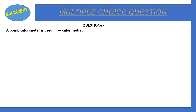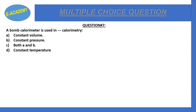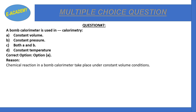Question number seven: A bomb calorimeter is used in which type of calorimetry — constant volume, constant pressure, both A and B, or constant temperature? The correct option is A: constant volume. A bomb calorimeter is used in constant volume calorimetry, as chemical reactions in a bomb calorimeter take place under constant volume conditions.